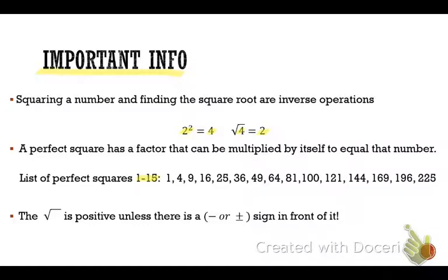What's 1 times 1? 1. 2 times 2? 4. 3 times 3? 9. 4 times 4? 16. And now let's say the rest — we know it's 5, 6, 7, all the way through: 25, 36, 49, 64, 81, 100, 121, 144, 169, 196, and 225.